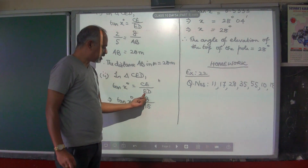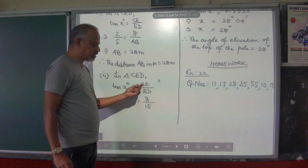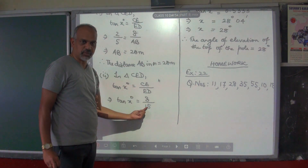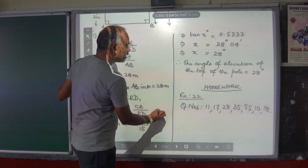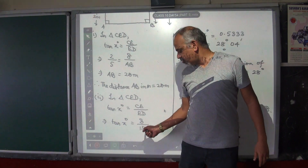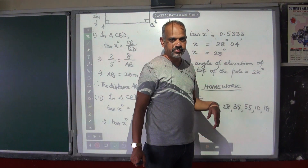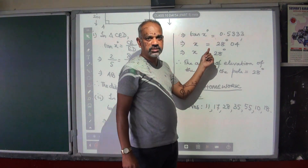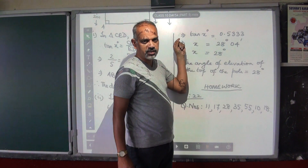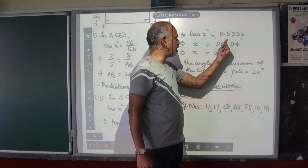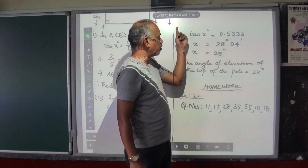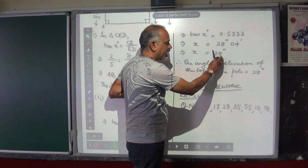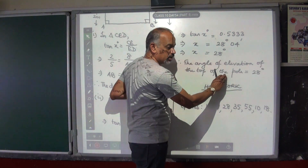Tan X is equal to CE, which is 8, by ED, where the distance from the pole to the man was given as 15 in the second part of the question. Simplifying this: tan X is equal to 8 divided by 15, which gives you 0.5333. You have to find this value from the natural tangent table — I have shown reading this table in day 51, please check that one. You will get X is equal to 28 degrees and 4 minutes according to the table. The question says round it off to the nearest degree, so you can leave out the 4 minutes. Therefore the angle of elevation of the top of the pole is 28 degrees.